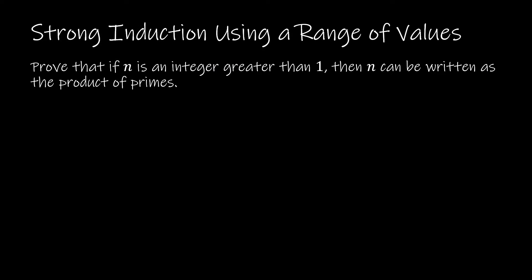For our first proof, we'll take a look at using strong induction with a range of values. If you have not already watched the video from 5.1 about mathematical induction, please be sure to watch that first so that you understand this is just a form of mathematical induction. What we're trying to prove is that if n is an integer greater than 1, then n can be written as the product of primes. So let p of n be the statement: if n is an integer greater than 1, n can be written as a product of primes.